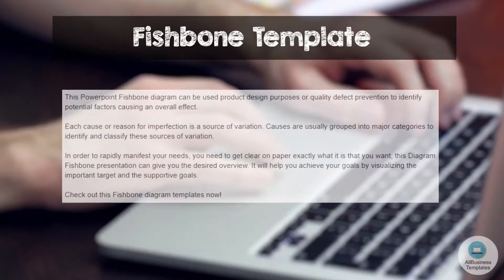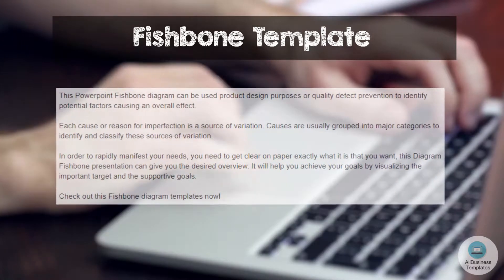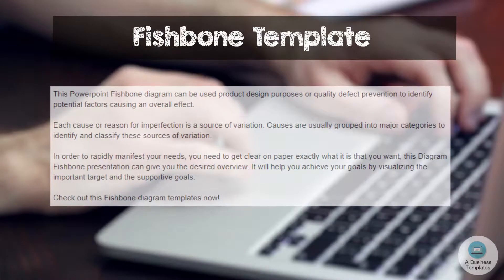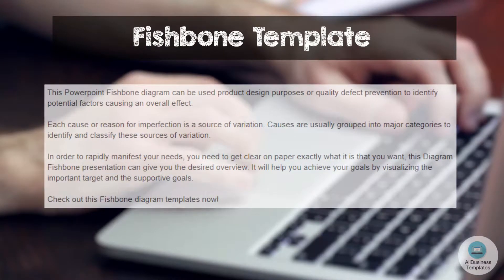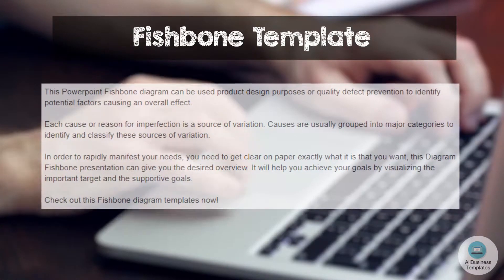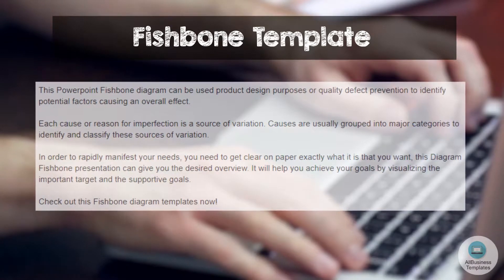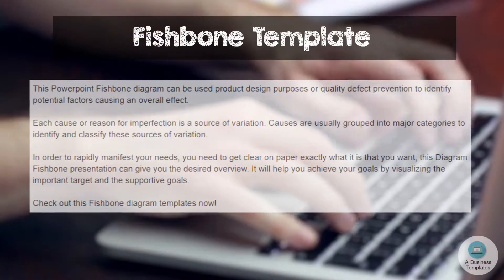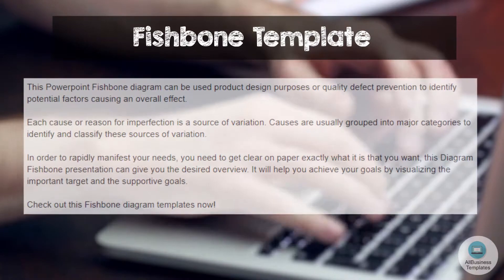In order to rapidly manifest your needs, you need to get clear on paper exactly what it is that you want. This fishbone diagram presentation can give you the desired overview. It will help you achieve your goals by visualizing the important target and the supportive goals.